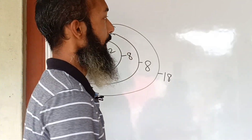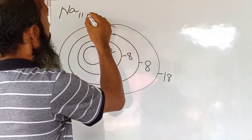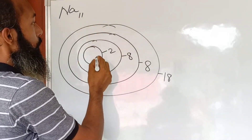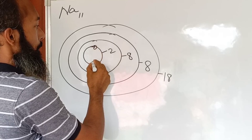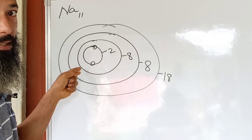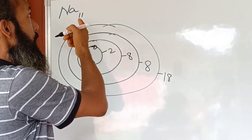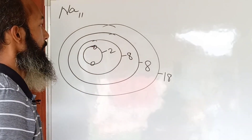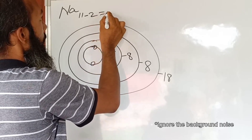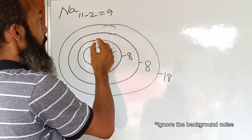Sodium has 11 electrons. From these 11 electrons, two electrons will enter the first shell. Without filling the first shell, the electrons cannot go to further shells like M-shell or N-shell — that is the condition. After filling the K-shell, the remaining nine electrons can enter the second shell.